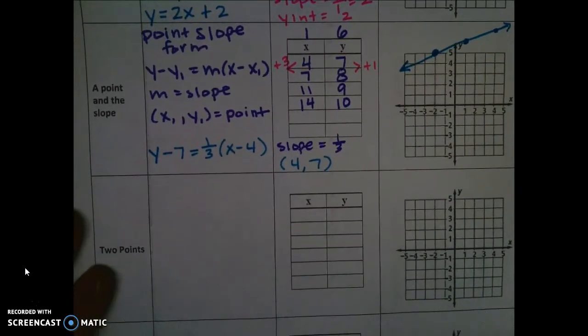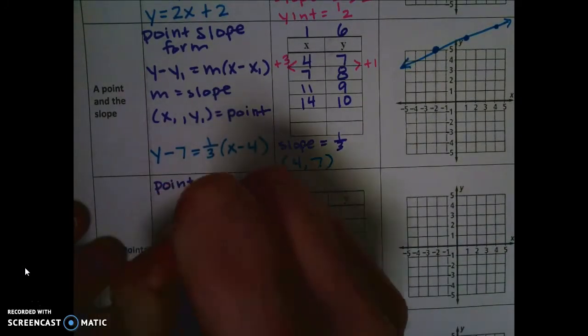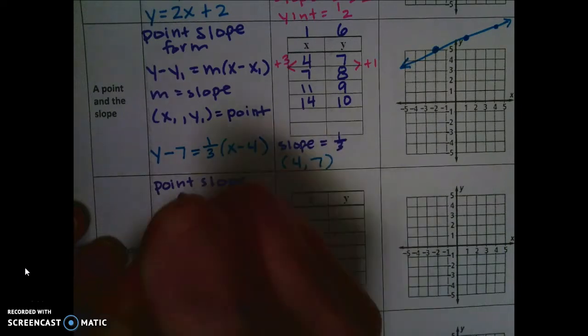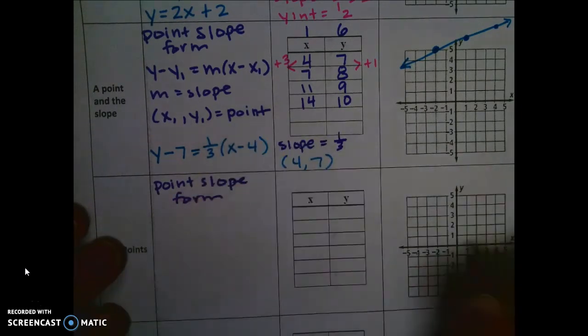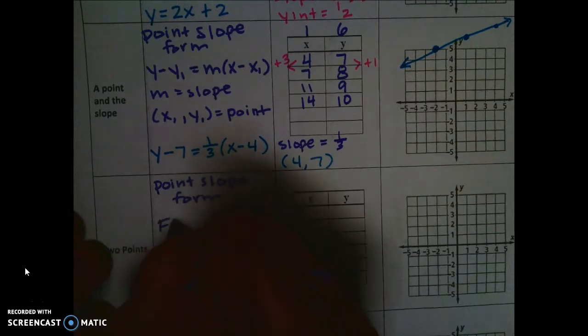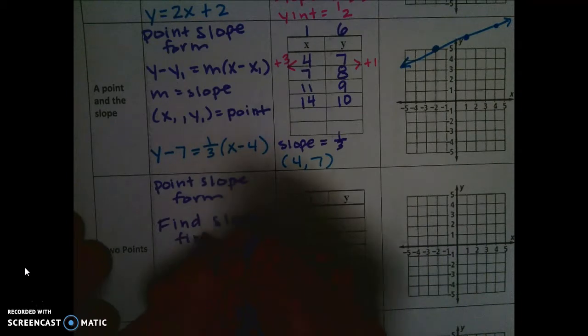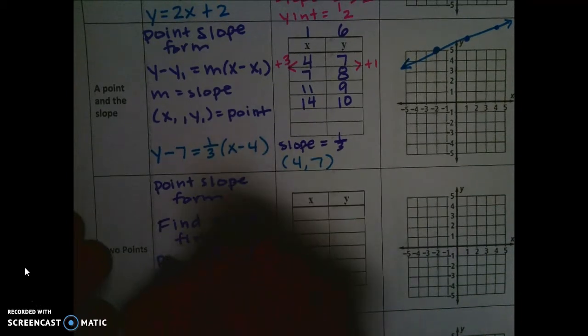Next example. If we are given two points, you're also going to use point-slope form to start with, which is the same as it is above, but you need to find the slope first. And then pick one point to plug in.